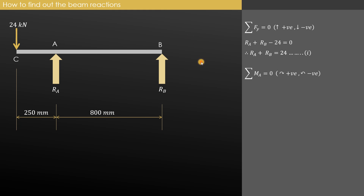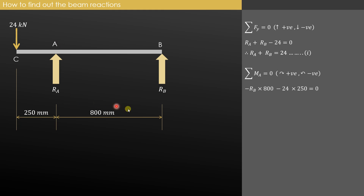The second condition of equilibrium is summation of moment about A equals 0. Rb will have an anticlockwise moment about A — the upward-acting arrow of Rb produces anticlockwise moment about point A. Moment is force multiplied by perpendicular distance, so it is Rb into 800. The 24 kN downward force also produces an anticlockwise moment about A, so that is also negative: 24 into 250.